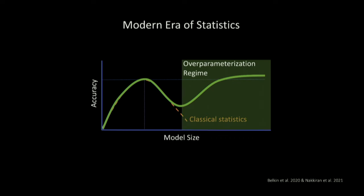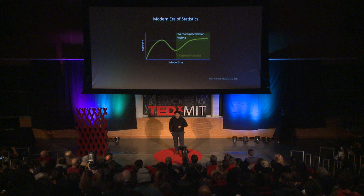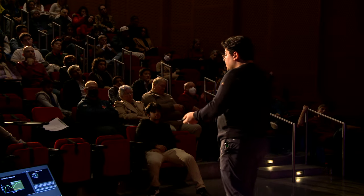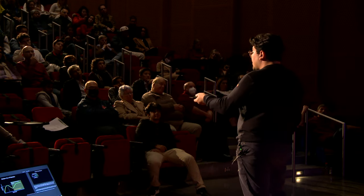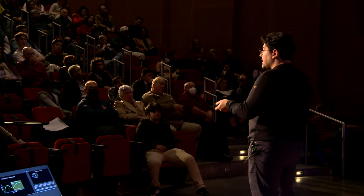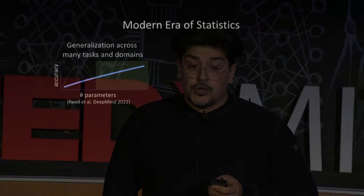A new regime gets generated — we call it an over-parameterized regime — where we have super large neural networks, even larger than the training data we have. In terms of absolute accuracy, they're not that different from that first peak. But new behavior emerges in that over-parameterized regime.